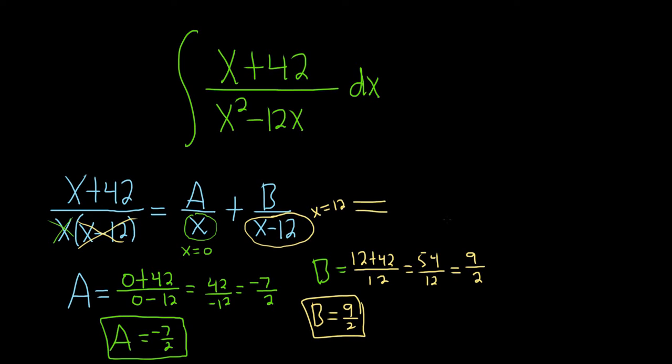So all of this is equal to... A is negative 7 halves, so we typically put it in the front like this: negative 7 halves, 1 over x. And B is 9 halves, so plus 9 halves times 1 over x minus 12. Good stuff.